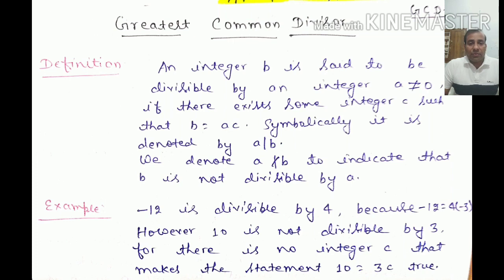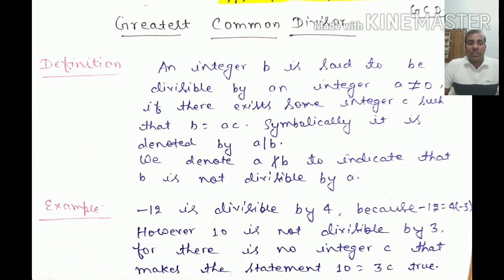For example, minus 12 is divisible by 4 because minus 12 equals 4 times minus 3. However, 10 is not divisible by 3 because there is no integer c such that 10 equals 3c. When c equals 1, 3c equals 3; c equals 2 gives 6; c equals 3 gives 9; c equals 4 gives 12. So we cannot find an integer c to make 10 equals 3c true.